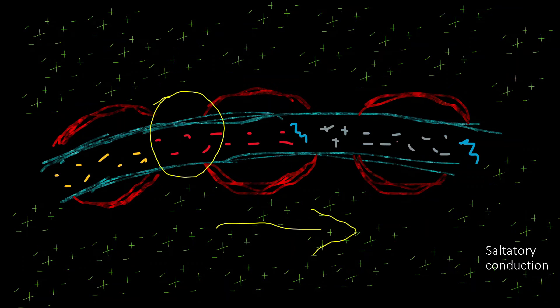And as the action potential travels to the right, you see that the graph, this region of repolarization is also moving to the right, and this region of hyperpolarization is also moving to the right. This again helps stop the back propagation of action potentials.